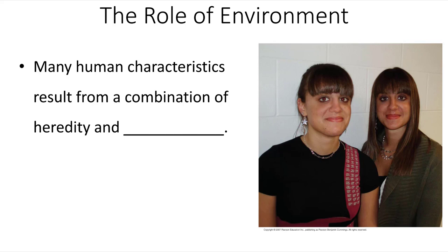Many human characteristics result from a combination of heredity and environment. Here we see two identical twin sisters. Genetically they are the same — they're the result of a single egg that was fertilized and then split into two individuals during development. And yet we notice differences between them: slight differences in complexion, level of skin pigmentation, and slight differences in hair color. This could be that one sister lives in a sunnier environment and is exposed to the sun more often, which can cause darkening of the skin and potentially lightening of the hair. But also, if one sister decided to bleach her hair and dye it blue, that would also be an environmentally caused difference in phenotype.